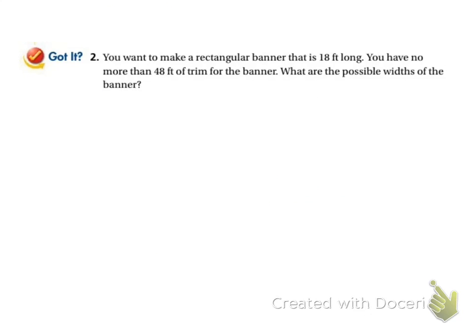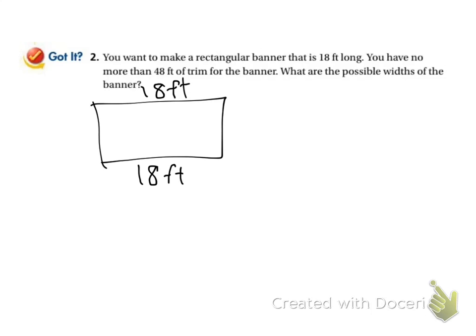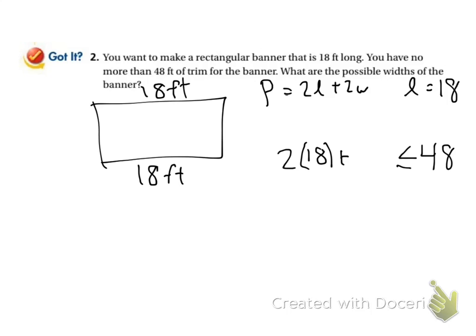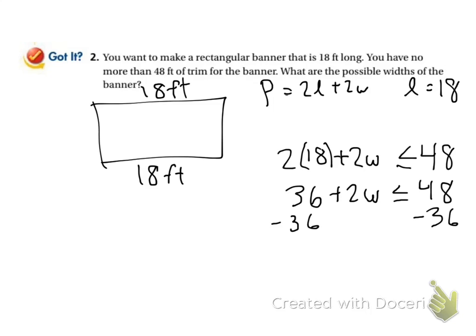You want to make a rectangular banner that is 18 feet long — if this is 18 feet down here, this is also 18 feet up there. You have no more than 48 feet of trim for the banner. What is the possible width of the banner? The perimeter of a rectangle is 2L plus 2W. My length is equal to 18, and it needs to be less than or equal to 48, because that's how much trim I have. So I can plug in for my L: 2 times 18 is 36, plus 2W. I subtract 36 from both sides — those cancel off — and I just get 2W is less than or equal to 12.